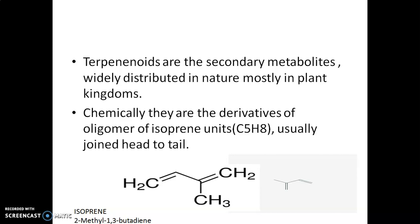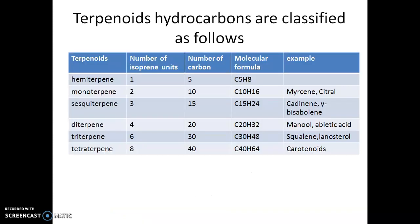Terpenes are the hydrocarbons, whereas terpenoids are basically the oxygenated derivatives of these hydrocarbons. Terpenoid hydrocarbons are classified according to the number of isoprene units present in their structure.